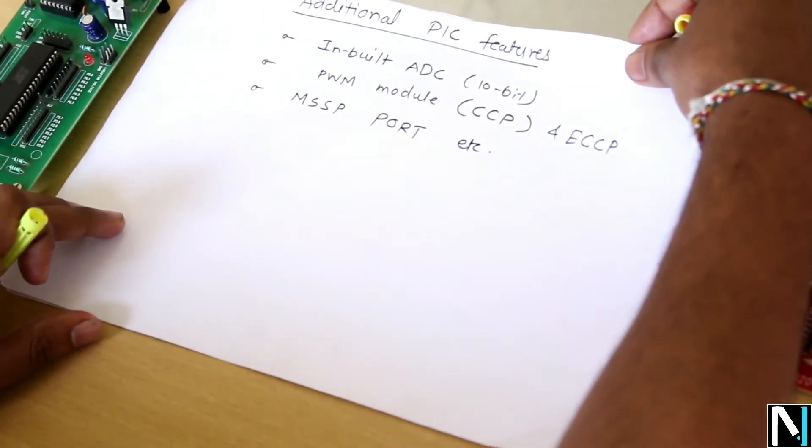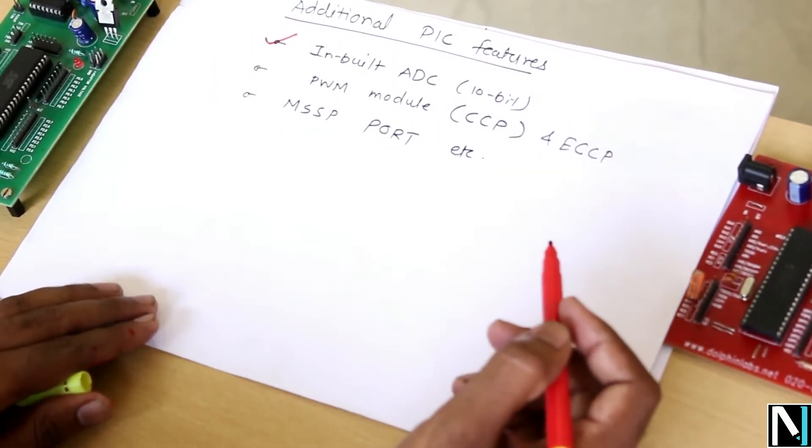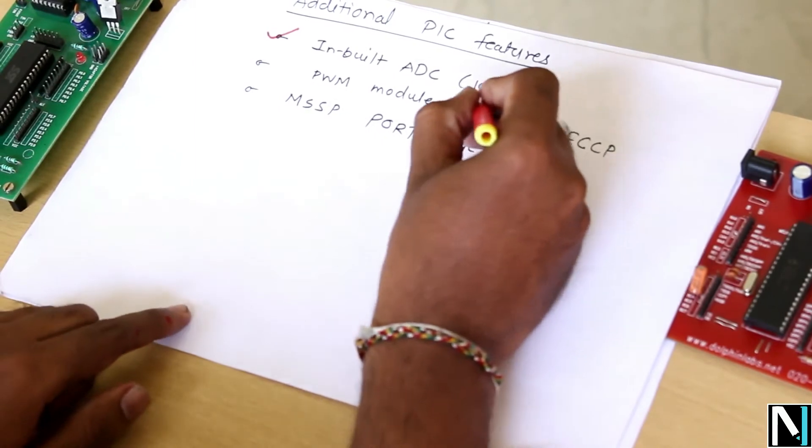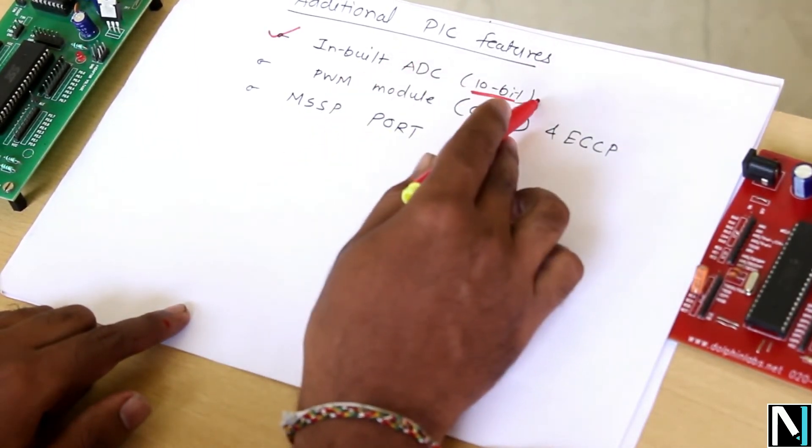Additional features of PIC 18F as compared to the 8051 microcontroller - these are the different modules which are present in the PIC microcontroller. It has the inbuilt ADC, no need to interface external ADC, 10-bit internal ADC. So it will convert the input data into the 10-bit digital output.